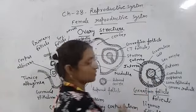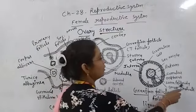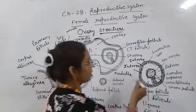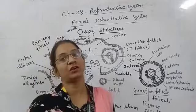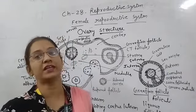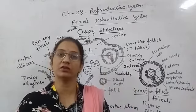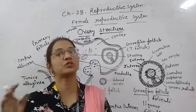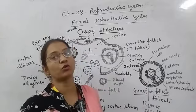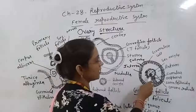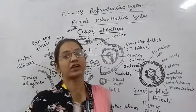The secondary oocyte inside the Graafian follicle is covered by two layers. The first layer directly around it is called the zona pellucida, which is a thick layer. Outside the zona pellucida there is a column of cells called the corona radiata. This entire structure surrounding the secondary oocyte is called the Graafian follicle.